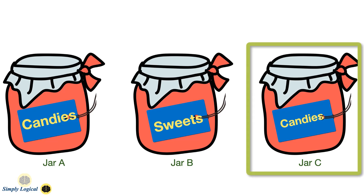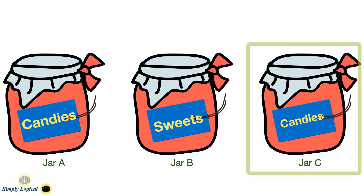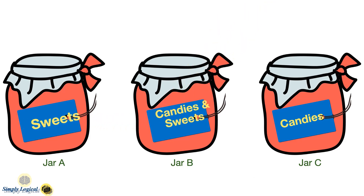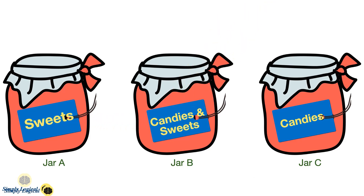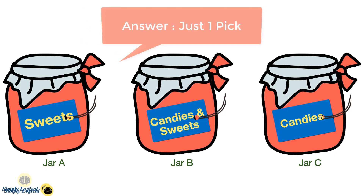Since jar C has candies only, jar B can contain sweets or mixture — but jar B must contain the mixture because its label reads 'sweets,' which is wrong. Therefore jar A must contain sweets. The correct labels are: jar A contains sweets, jar B contains the mixture of candies and sweets, and jar C contains candies. The answer is just one pick is required to correctly label all jars. There are many variations to this puzzle, but the logic remains the same.